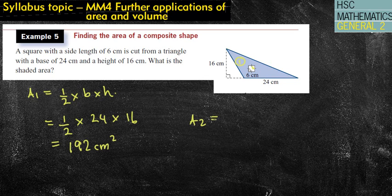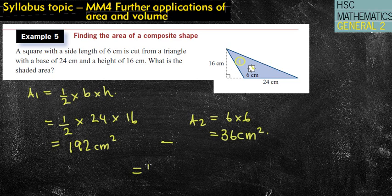We get an answer of 192 centimeters squared. Now, the area 2, which is of my square, will be 6 by 6, which equals 36 centimeters squared. Now, unlike the last question, you can see the square has been removed from that triangle. So, I'm going to subtract those two. So, I'm going to do 192, subtract the 36. We get 156 centimeters squared as my final answer.